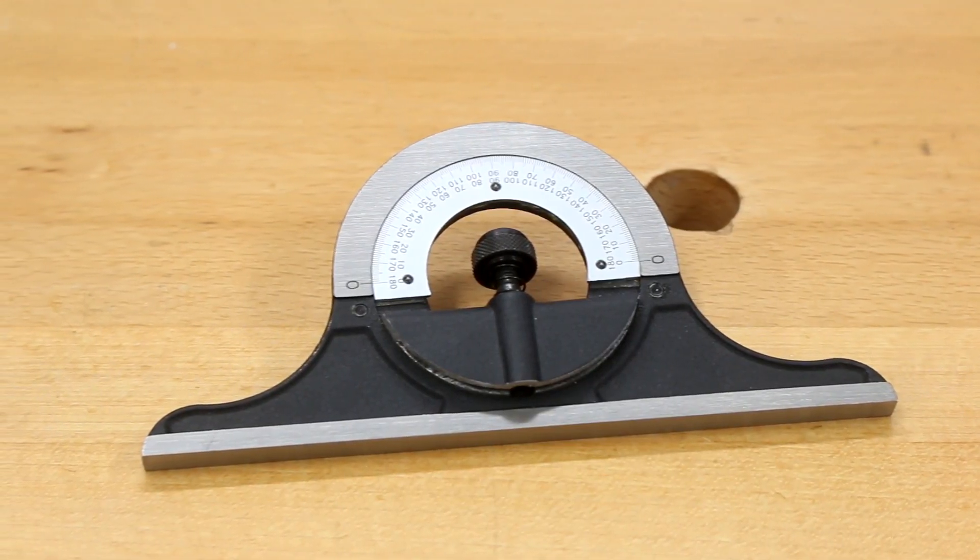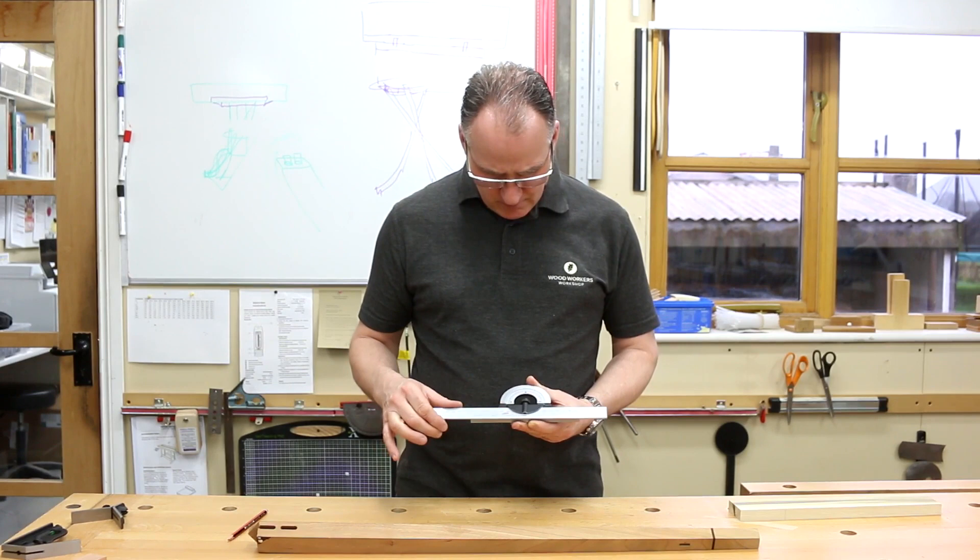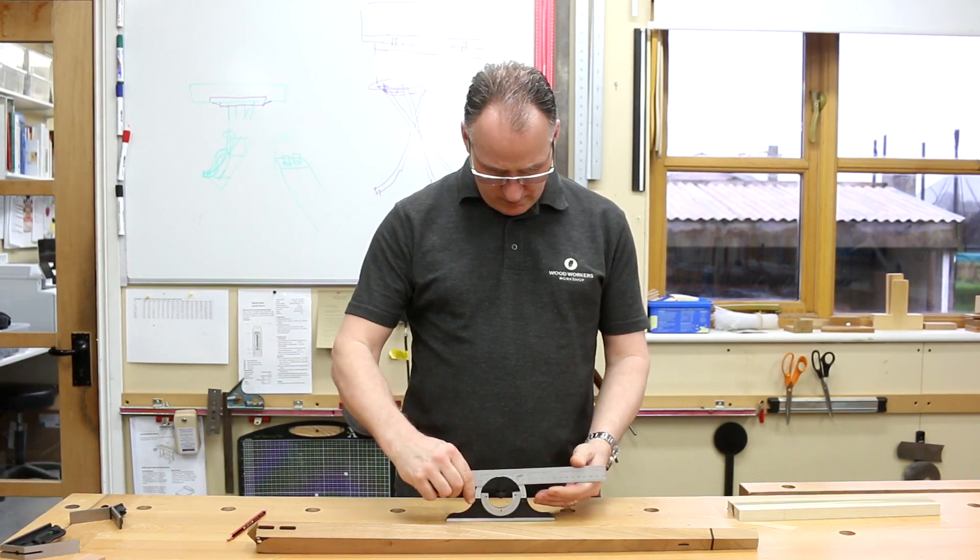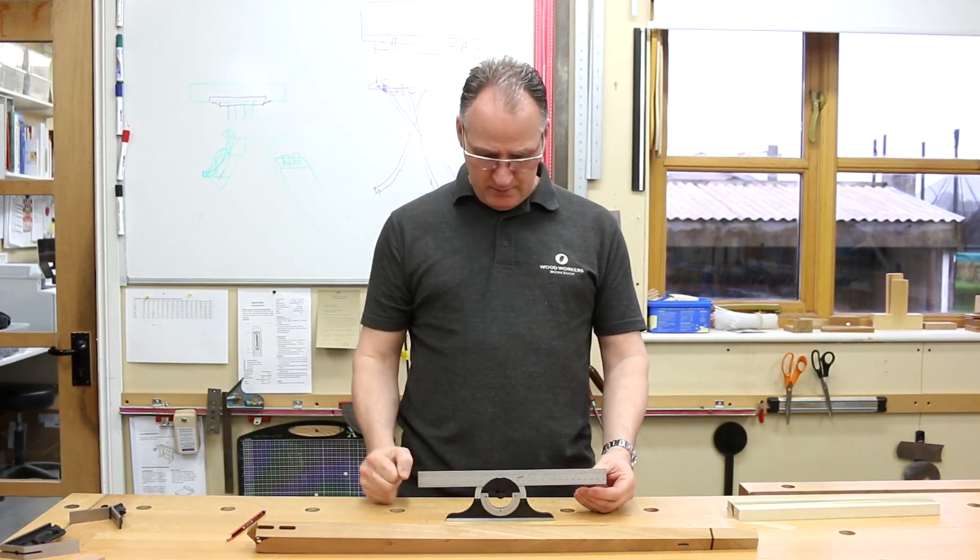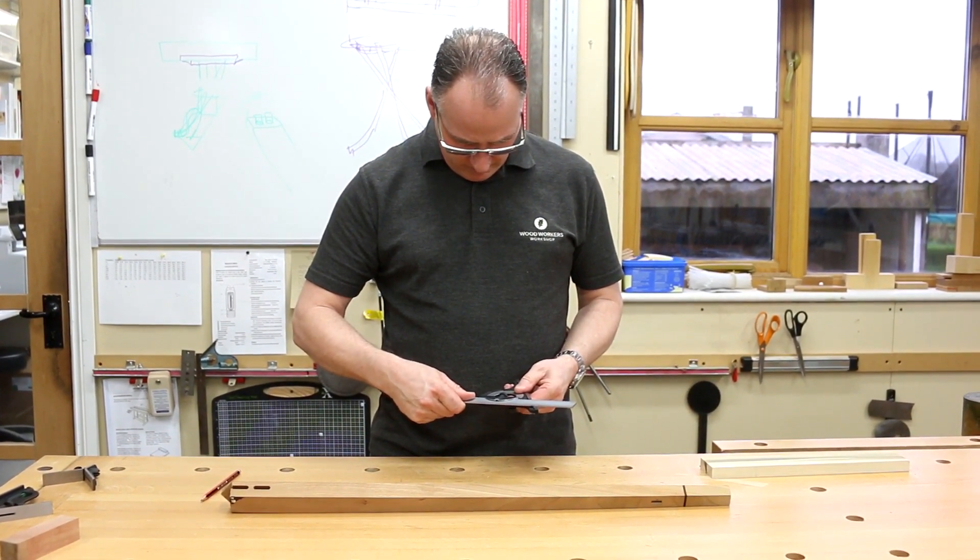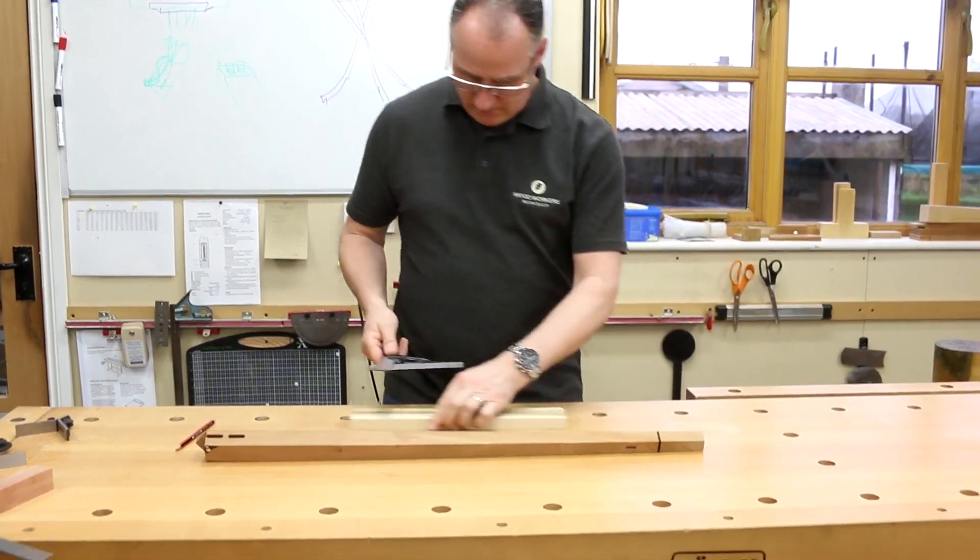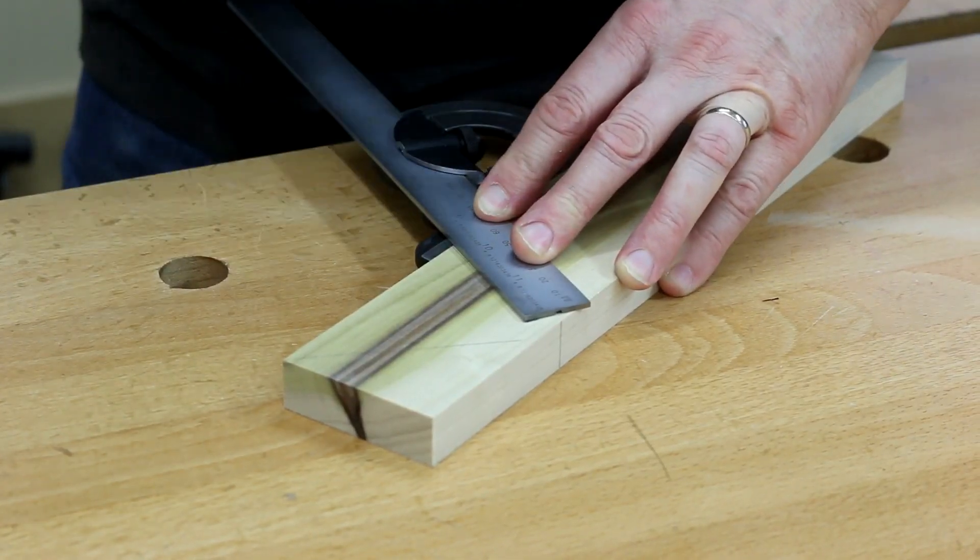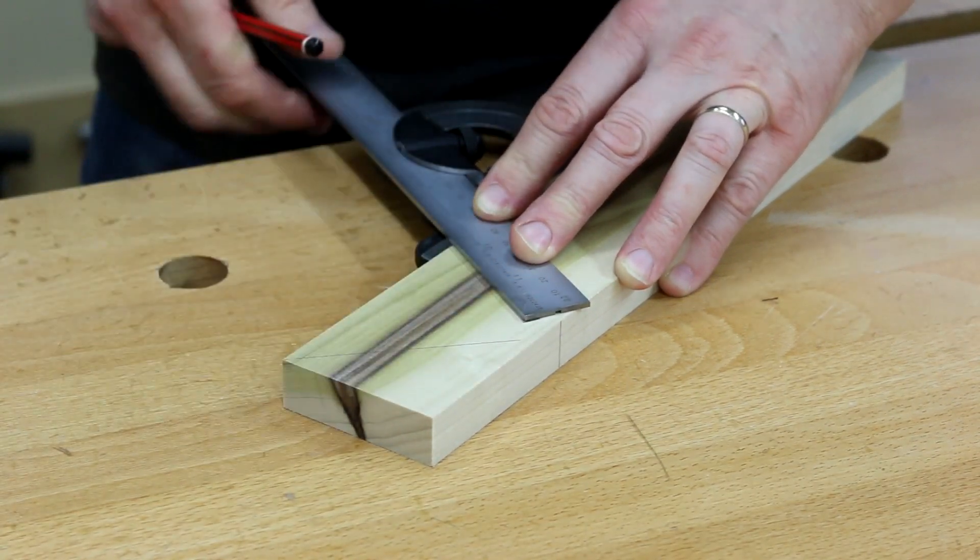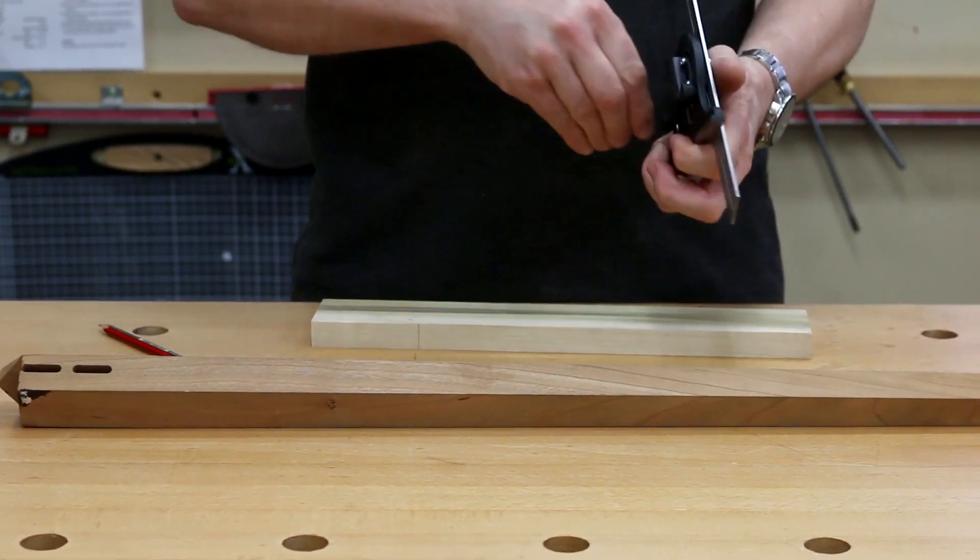The combination square set always comes with the protractor as well. So from here we've got 0 to 180 so we can go from a parallel line. People do sometimes use that if you get it set up right almost as a winding stick looking down a piece. But we can go at any angle in between, setting up here, tighten up the two knobs on the back and we can use him for marking across. We can also use the end of it to start marking off a bird's mouth if you're going to come back at the other angle.